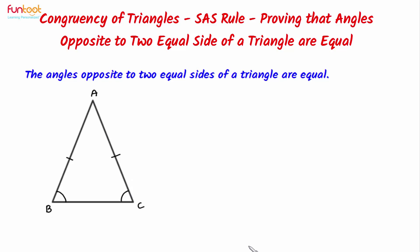So, here we have to prove that angle B is equal to angle C, and we will make use of congruency. But why? Because there is only one triangle here. To prove these two angles as equal, if we can represent them as parts of two triangles and then prove the triangles as congruent, then by CPCT we can say that these angles are equal.